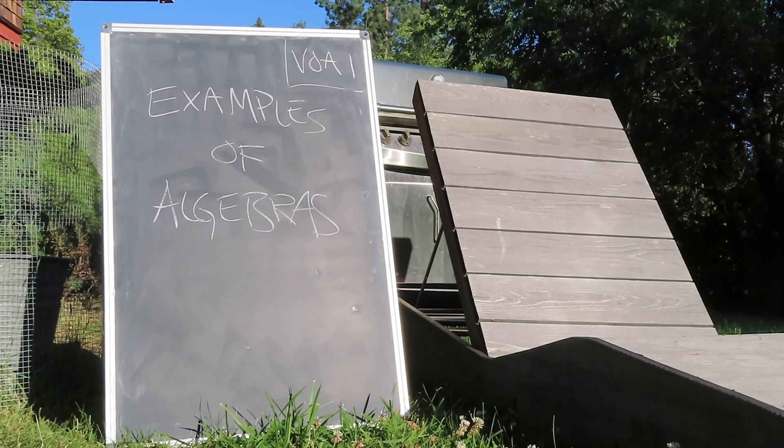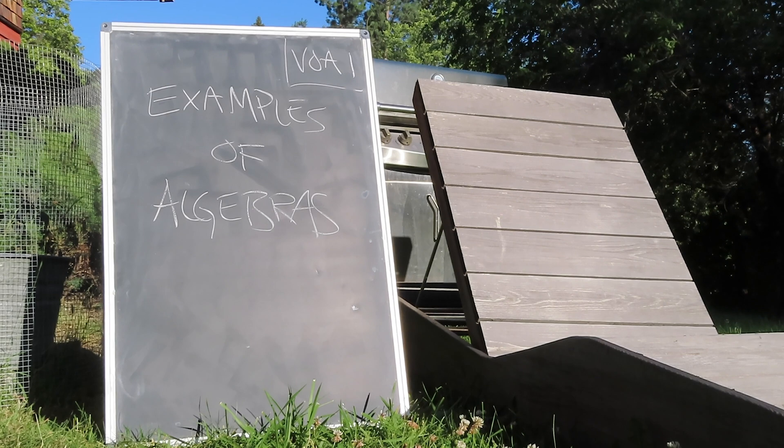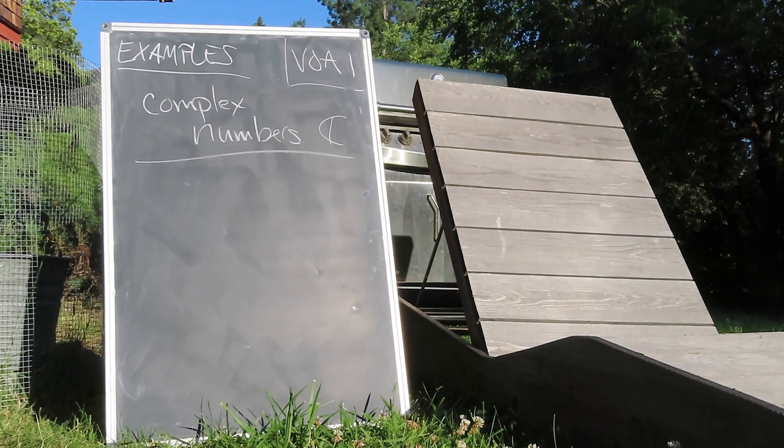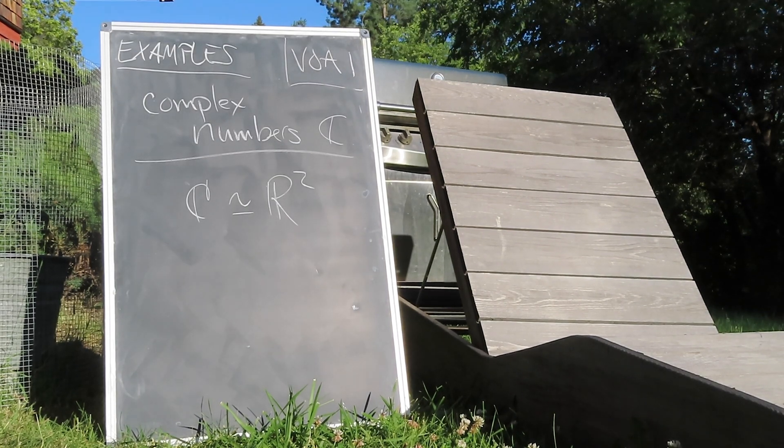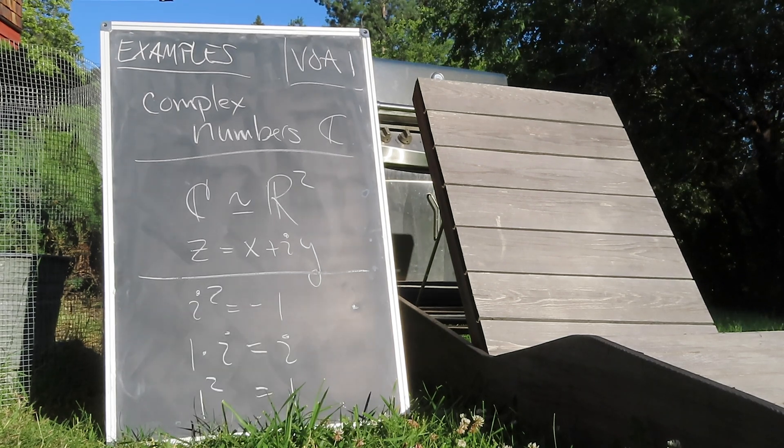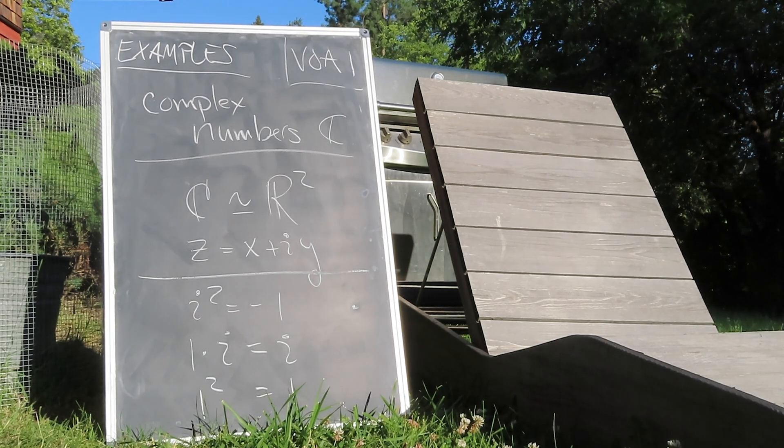Having seen R3 with the cross product, let's take a look at some other examples. The complex plane, which is linearly isomorphic to R2, is an algebra, where vector multiplication is basically defined by the rule that the imaginary unit should square to minus one.